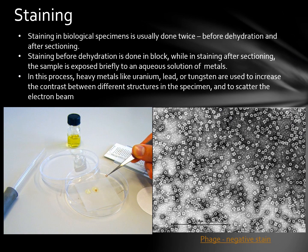Staining is a very crucial part of preparing your samples, especially for biological samples, to achieve improved contrast. Staining in biological specimens is usually done twice: before dehydration and after sectioning. Staining before dehydration is done in block, while staining after sectioning briefly exposes the sample to an aqueous solution of metals. Heavy metals like uranium, lead, or tungsten are used to increase the contrast between different structures and to scatter the electron beam.